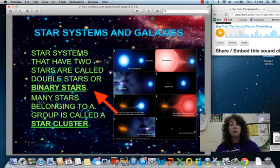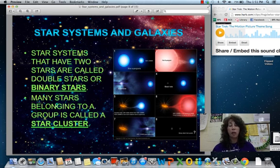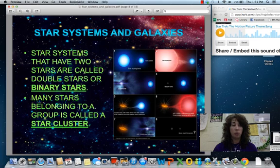Star systems that have two stars are called double stars. They are also called binary stars. And you can see several examples there of some other stars in our universe. Many stars belonging to a group is called a star cluster. So again, it's pretty rare for a star like ours, the sun, to sort of be on its own, but thank goodness it is. Otherwise it would be a little bit toastier here on earth.